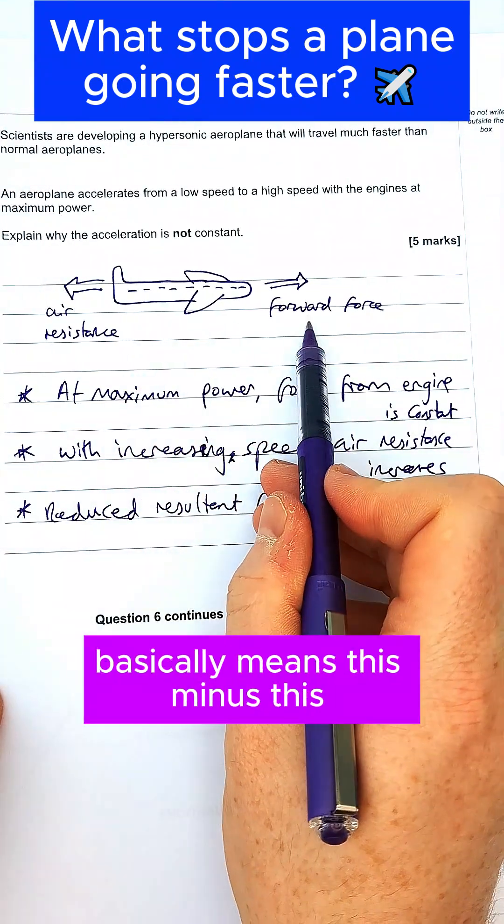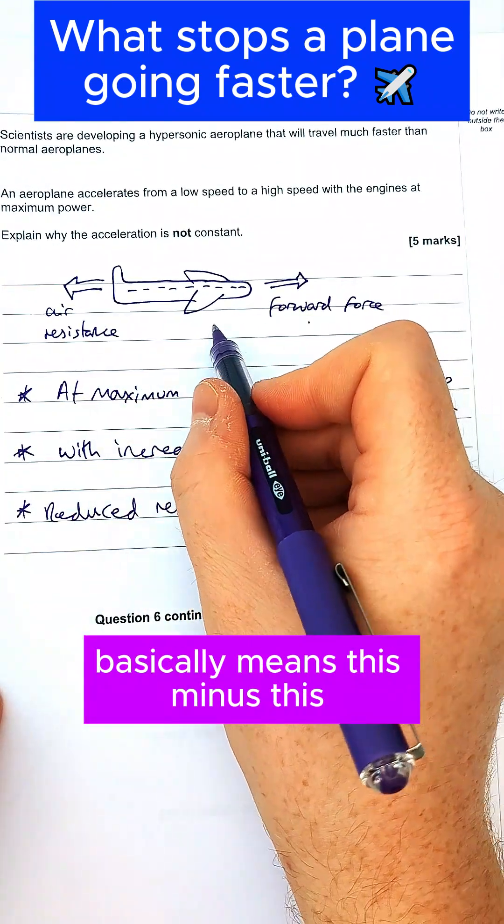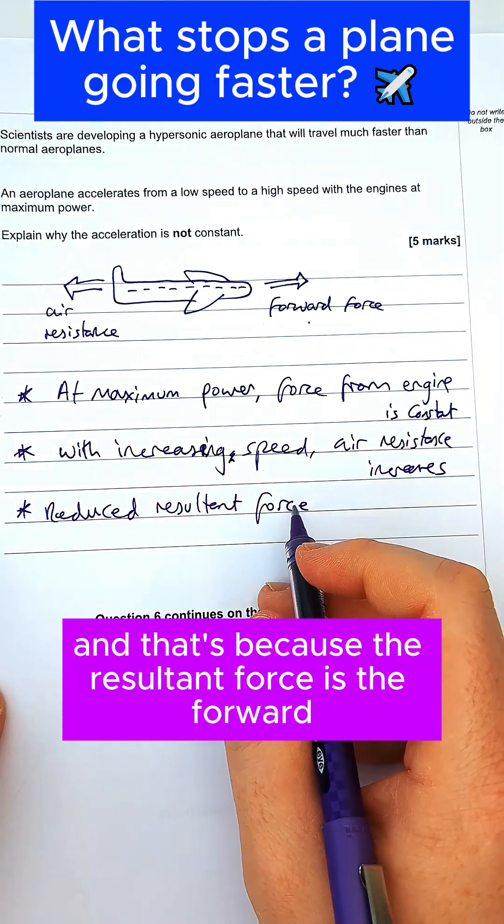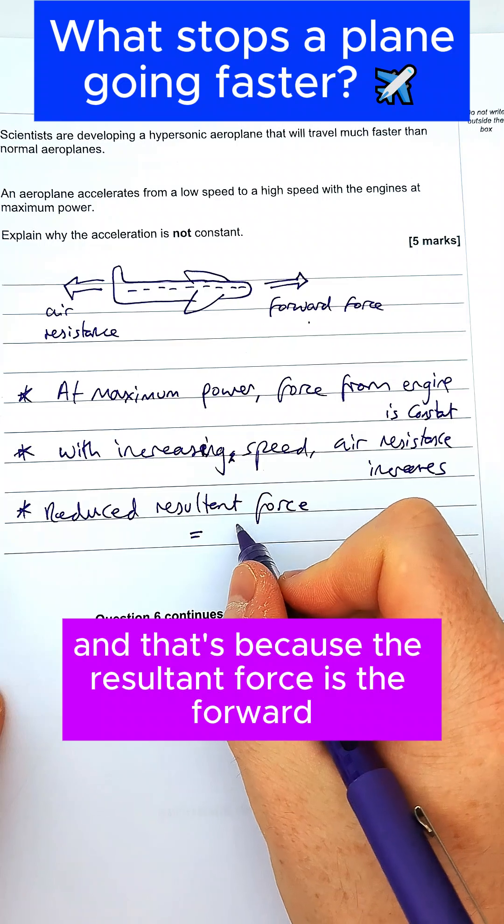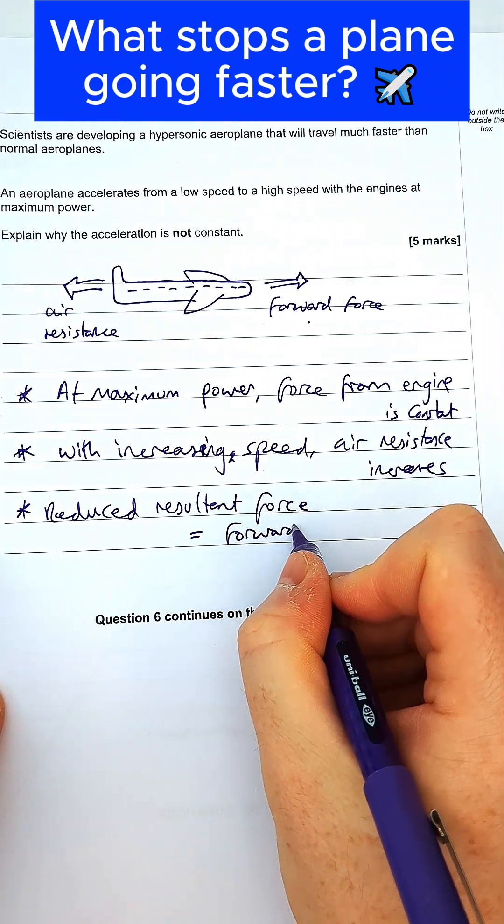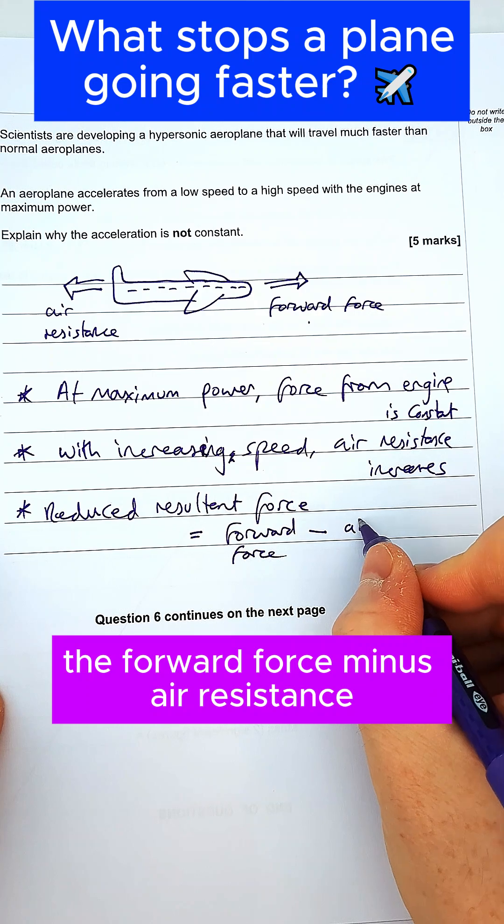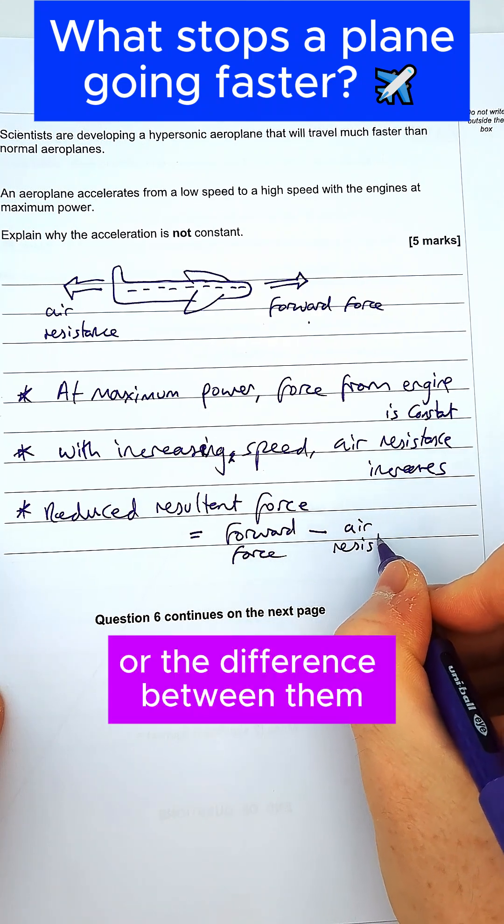They go in opposite directions, so we subtract them. So resultant force is decreased, and that's because the resultant force is the forward force minus the air resistance, or the difference between them you could say.